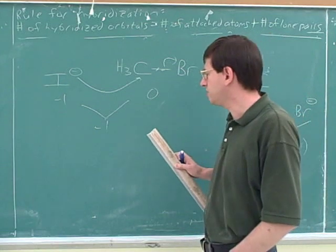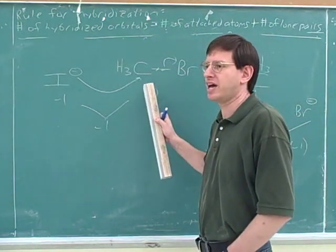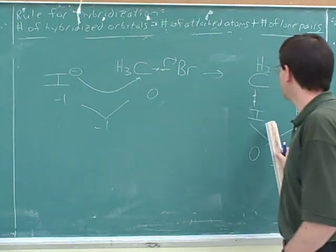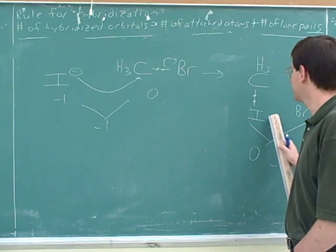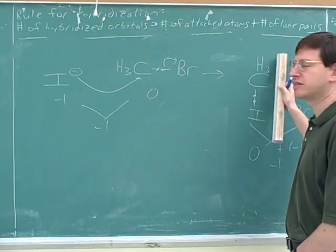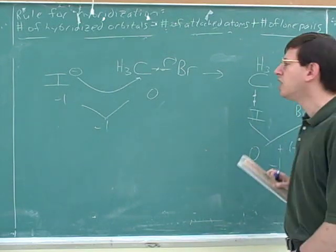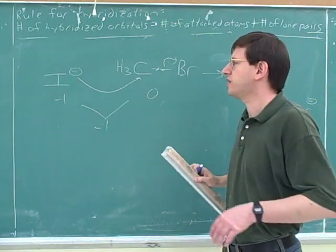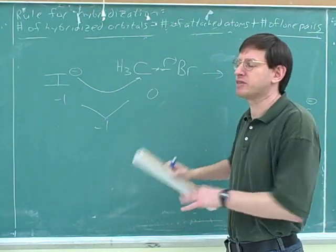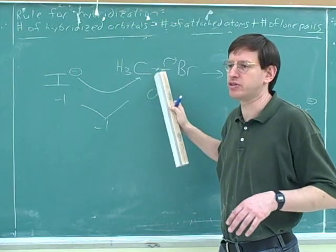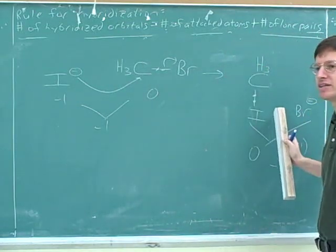Okay, something else I did here is I used what I would call the one atom at a time technique. I drew the new product one atom at a time. First the iodine, then the carbons, then the hydrogen, then the bromine. What a lot of students try to do is they try to draw the product in one fell swoop. But then they tend to make mistakes and break bonds they're not supposed to. So I would recommend just going one atom at a time.